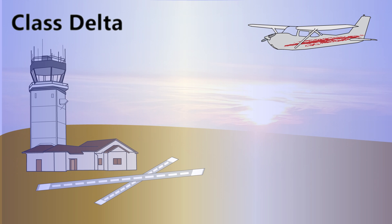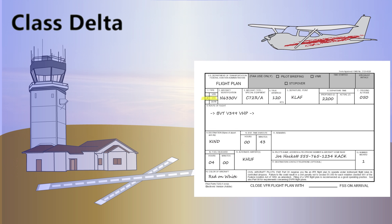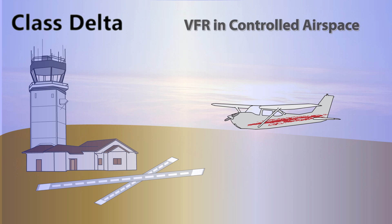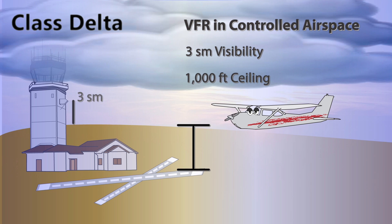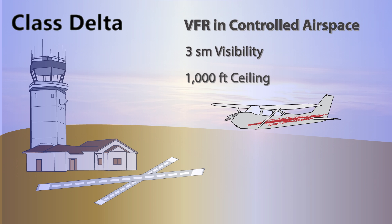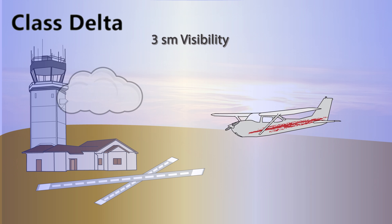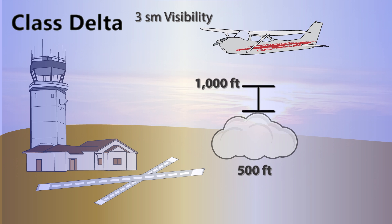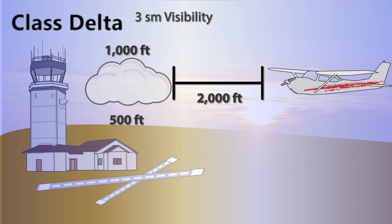Now that we are within the Class D airspace, we have a few other requirements to take into consideration. Unless we are operating under IFR and on an instrument flight plan, we have some weather requirements to keep in mind. Within a Class D airspace, basic VFR requirements are in place. In order for the airport to be considered VFR, there must be at least three statute miles visibility and a 1,000-foot ceiling. While operating VFR with this three-mile visibility or greater, we must also remain 500 feet below, 1,000 feet above, and 2,000 feet horizontally from any cloud.